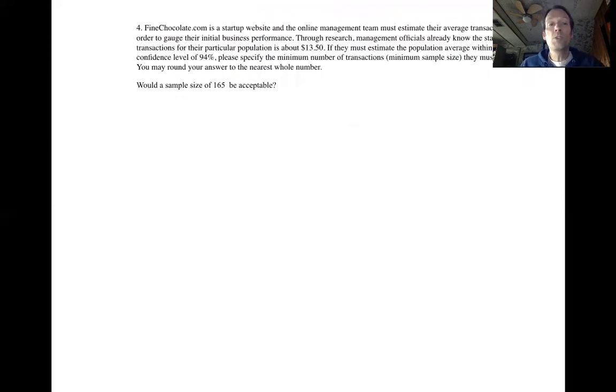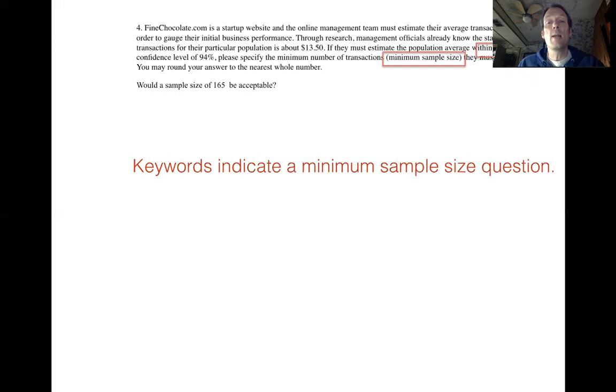Okay, so clues in the question. They're using the words minimum sample size. They're using the words within. And if we put both of those together, that means it's a minimum sample size question. So it could be minimum sample size for average or minimum sample size for proportions. Which is it?